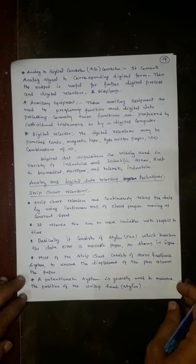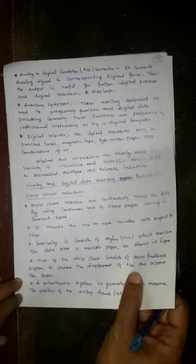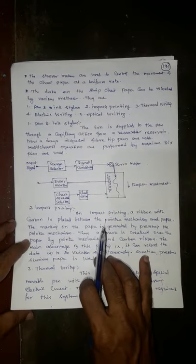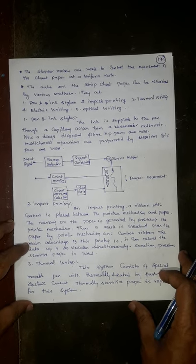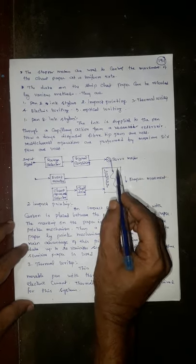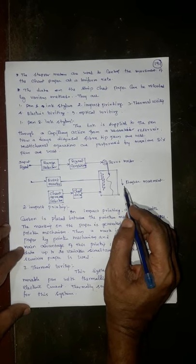A potentiometer system is generally used to measure the position of the writing head or stylus. The stepper motors are used to control the movement of the chart paper at a uniform rate. The paper speed is controlled or moved by a stepper motor.